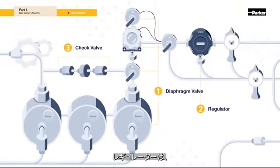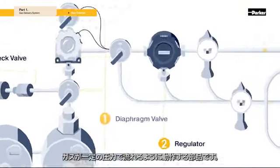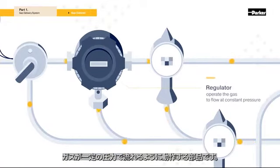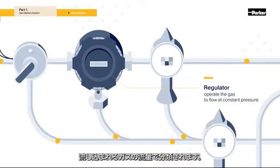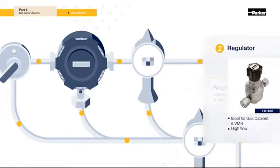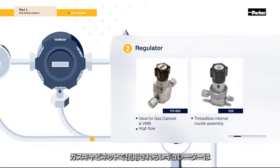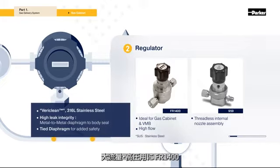The regulator is a component that operates to ensure the gas flows at a constant pressure. It is classified by the pressure range and flow rate of the gas being drawn in. The regulators used in the gas cabinet are the FR1400 for high flow and pressure, and the 959 for standard flow.